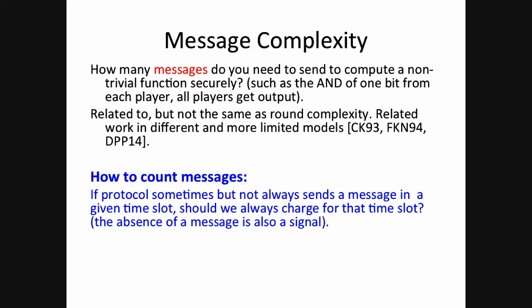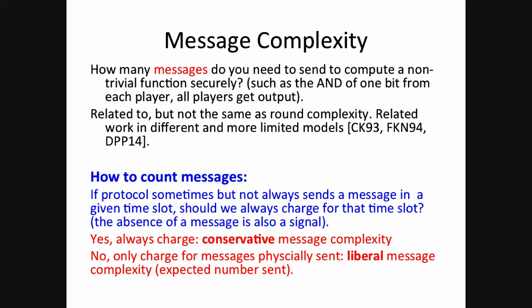Before we get to the results, it's worthwhile thinking about how to count messages — that may seem trivial but it's not. If the protocol sometimes but not always sends a message in a given time slot, is the absence of a message also a signal? One approach, called conservative message complexity, charges for a time slot if it's ever used. The other, called liberal message complexity, only charges for physically sent bits — the expected number of messages sent. The bounds we get are pretty close even for those two extreme ways of counting.